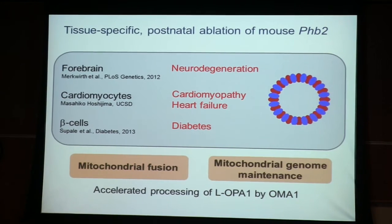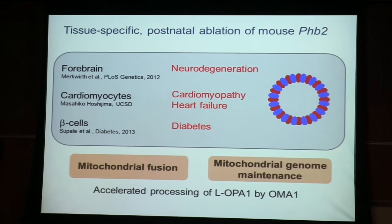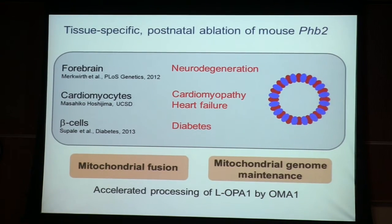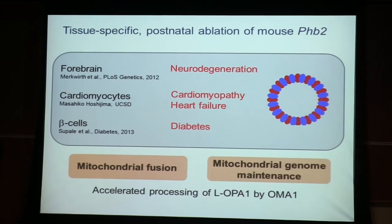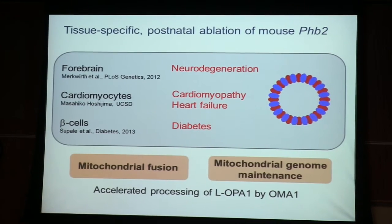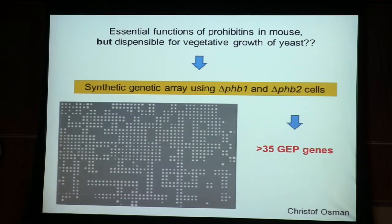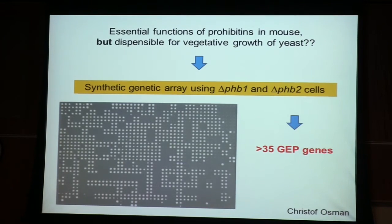This told us about the physiological consequences of losing the scaffold protein, but didn't really tell us much about its molecular function. That's not easy to answer for a scaffold protein that doesn't have enzymatic activity. Therefore, in parallel, we used yeast genetics to look for genes that interact with prohibitins — we were puzzled from the very beginning that, in contrast to the mammalian system where loss of prohibitins was essential, the loss of prohibitins in yeast had no obvious phenotype.